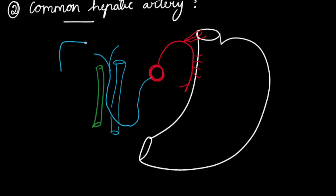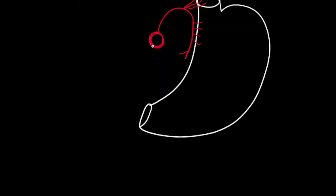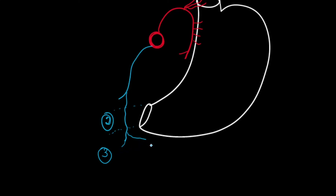At the porta hepatis we can see the bile duct, hepatic artery, and portal vein. The common hepatic artery gives a branch called the gastroduodenal artery at the upper border of the first part of the duodenum. The gastroduodenal artery then divides into two branches: the superior pancreaticoduodenal artery, and the right gastro-epiploic artery, which runs along the greater curvature of the stomach.